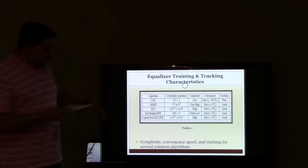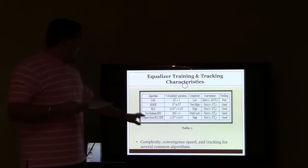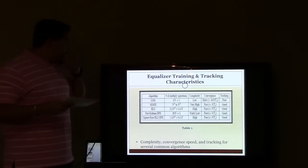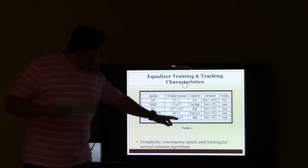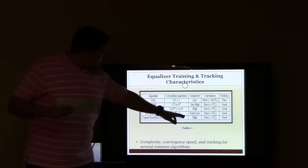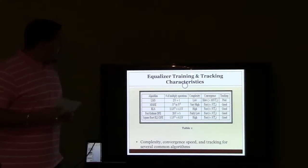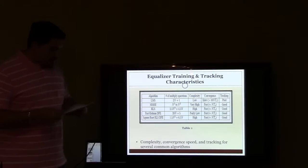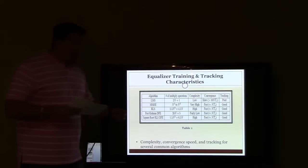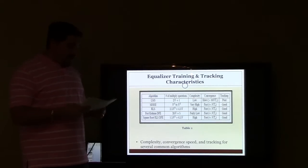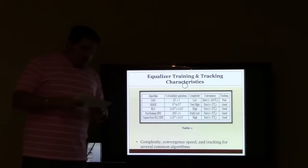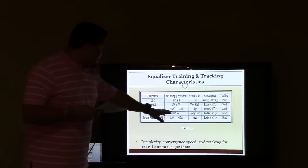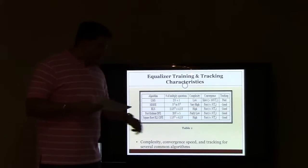The table below provides some characteristics of several algorithms. The following characteristics are provided: complexity, convergence speed, and tracking for these algorithms. For the purposes of this project, the RLS algorithm will be implemented. According to the table, the complexity is high, convergence is fast, and tracking is good.